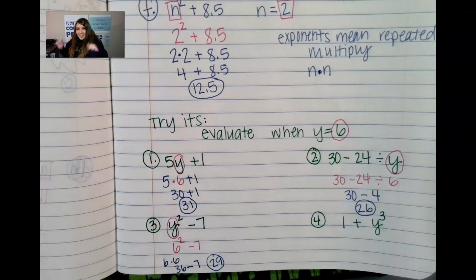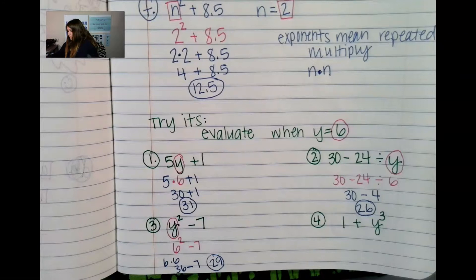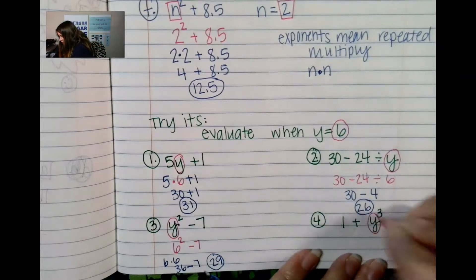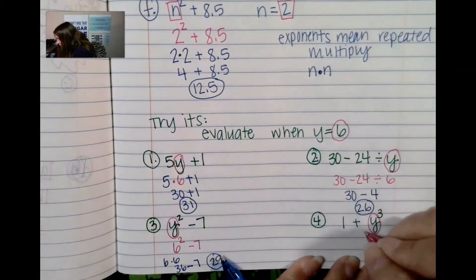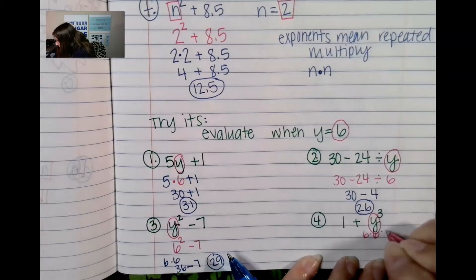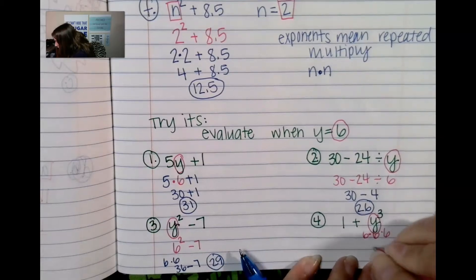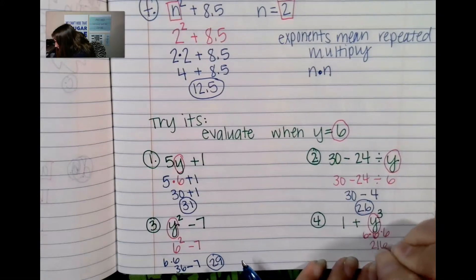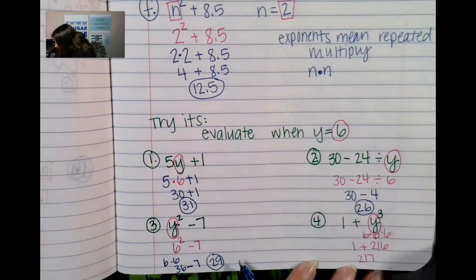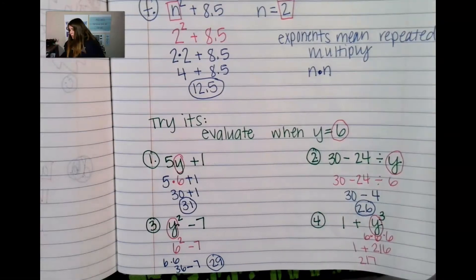Okie dokie, last one. Last problem, again we have another six here, another y, and this one is like six times six times six right so 36 times six gives us 216 plus one is 217. So 217.